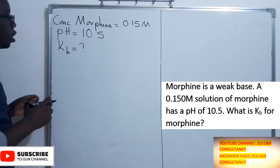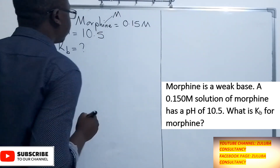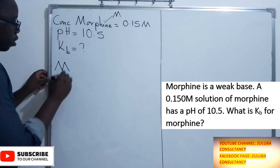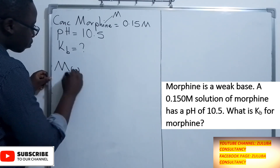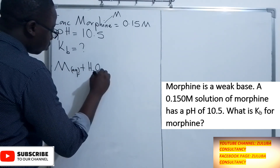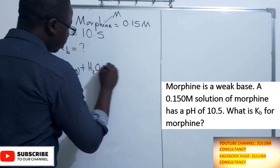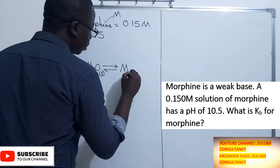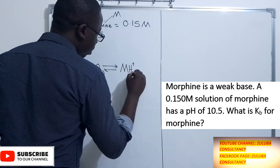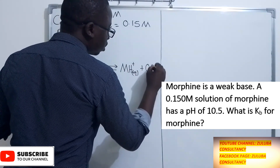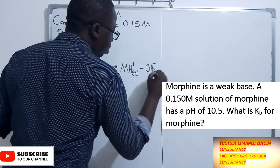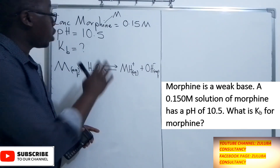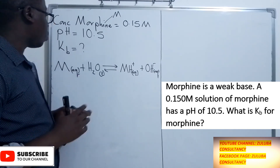In the equation, I'll represent morphine as M. When M, which is morphine, is in aqueous solution — that is, in water — and it dissociates, it should produce positive ions. This is the dissociation equation of this weak base. At this point, we can use the given information to calculate Kb.